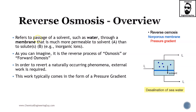Reverse osmosis refers to the passage of a solvent — which is not limited only to water, but water is one of the most common solvents used — through a membrane that is much more permeable to the solvent than to all other solids, be they inorganic ions, organic material, dissolved particles, and so on. As you can imagine, it is the reverse process of osmosis.